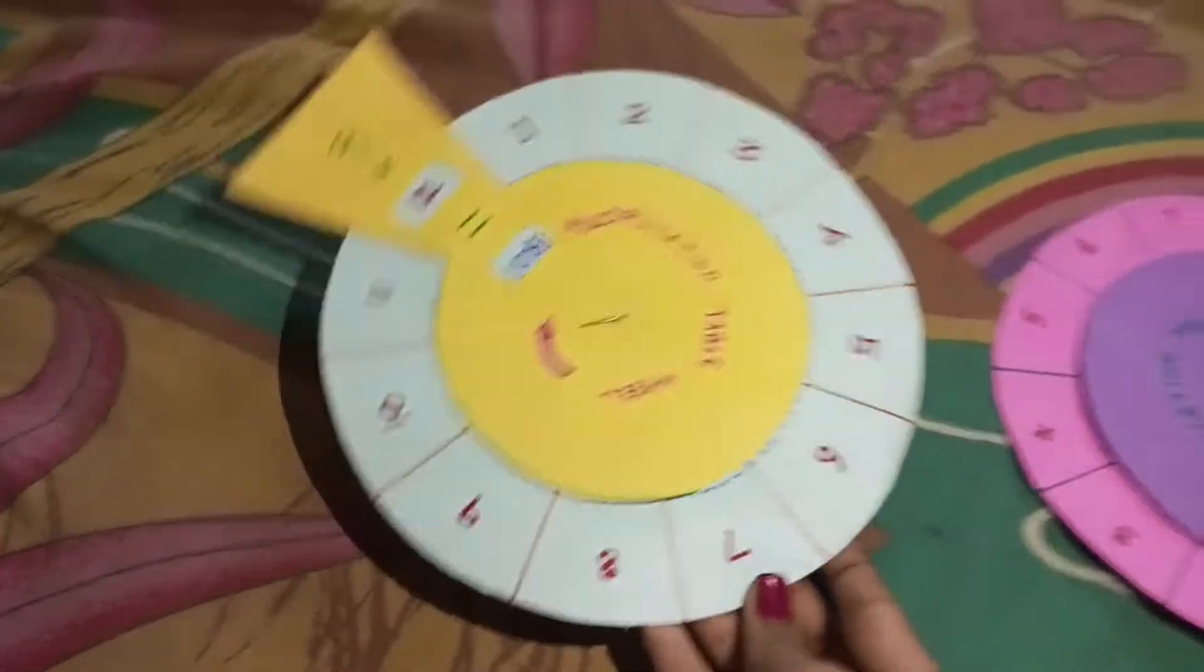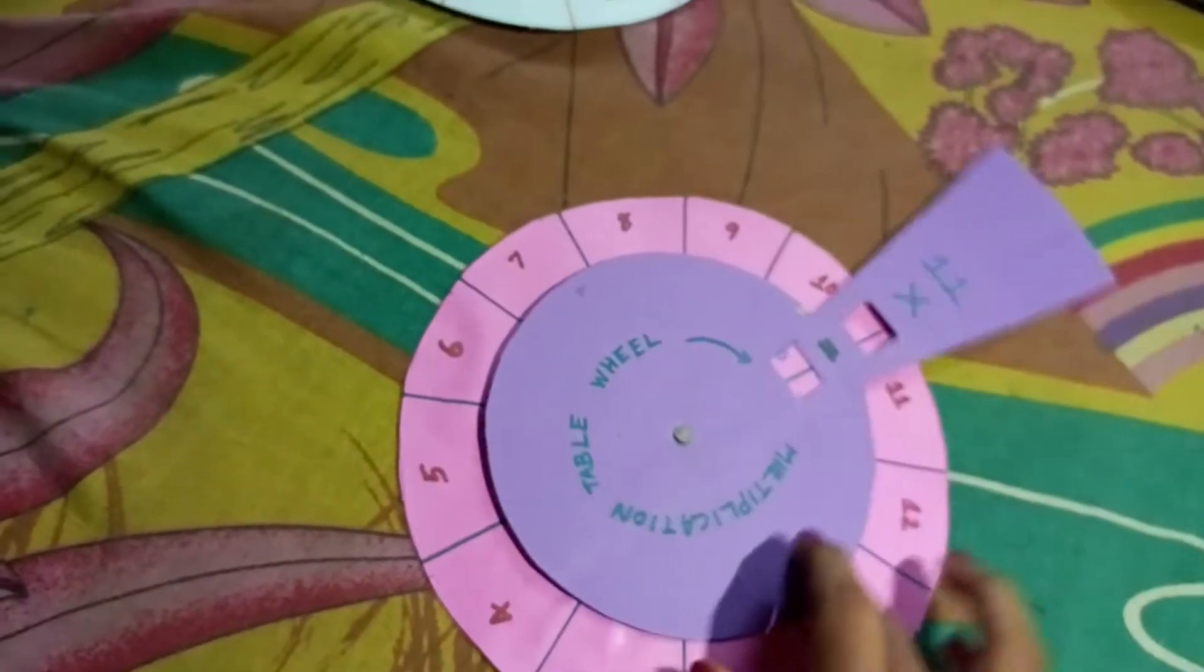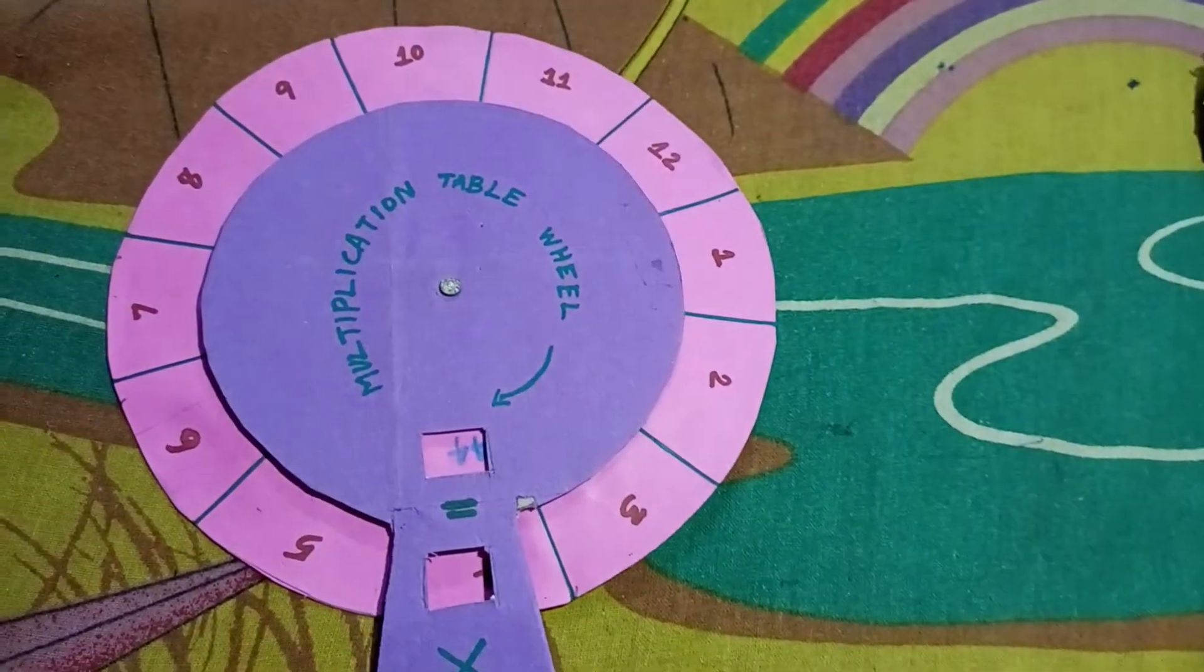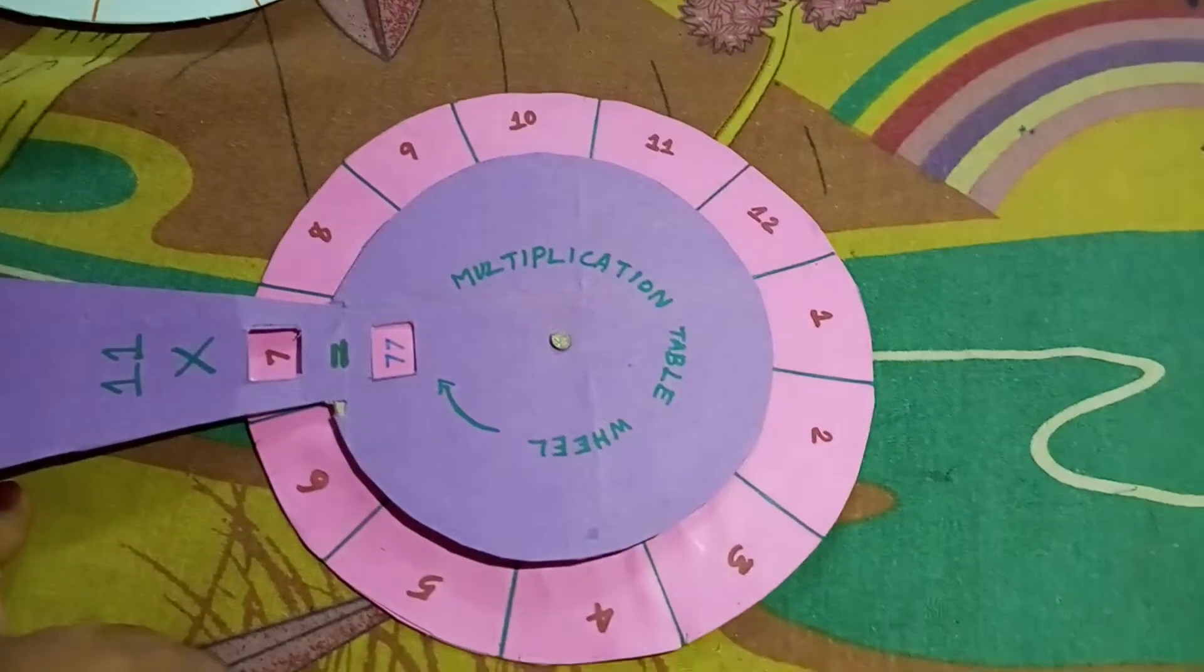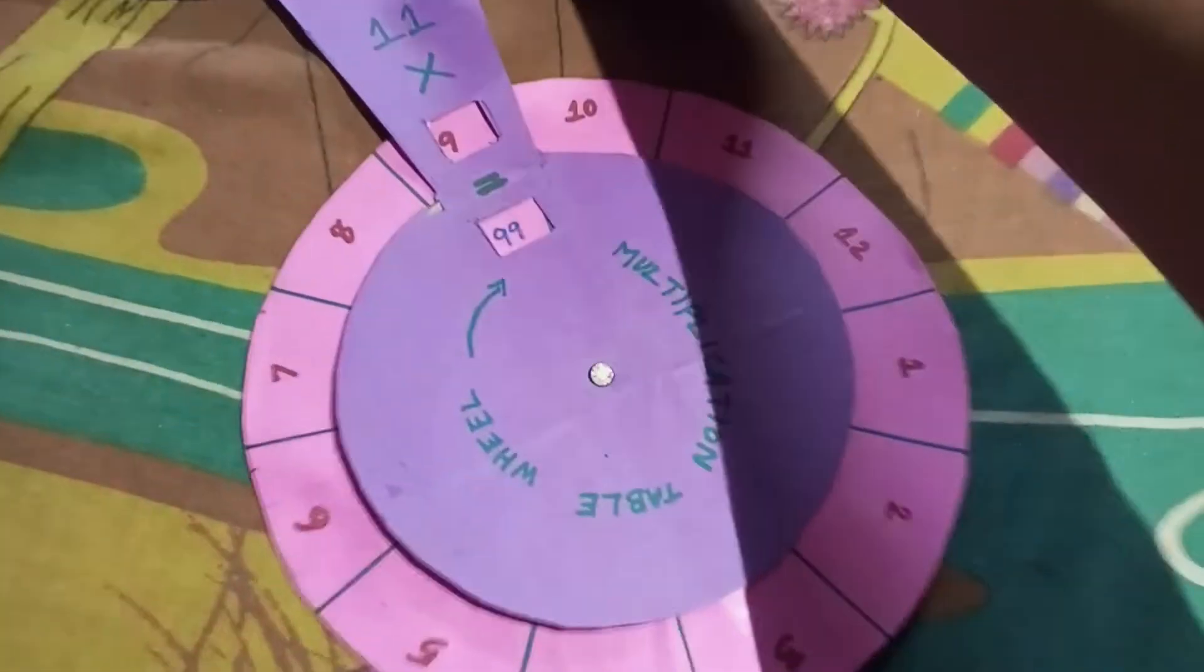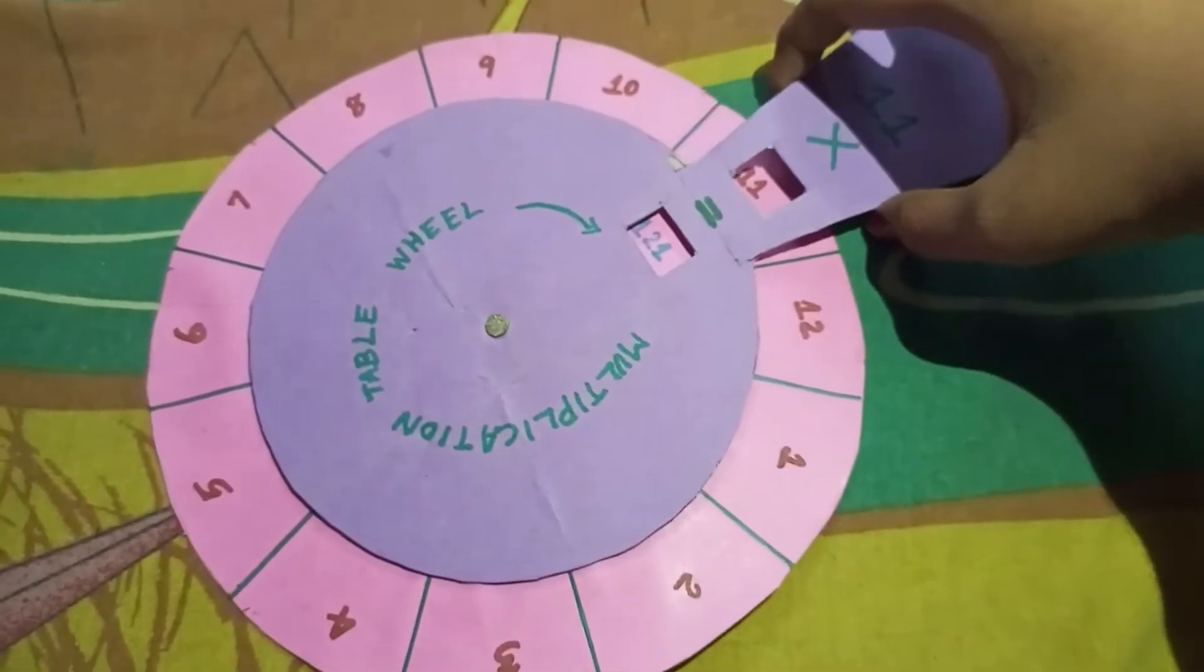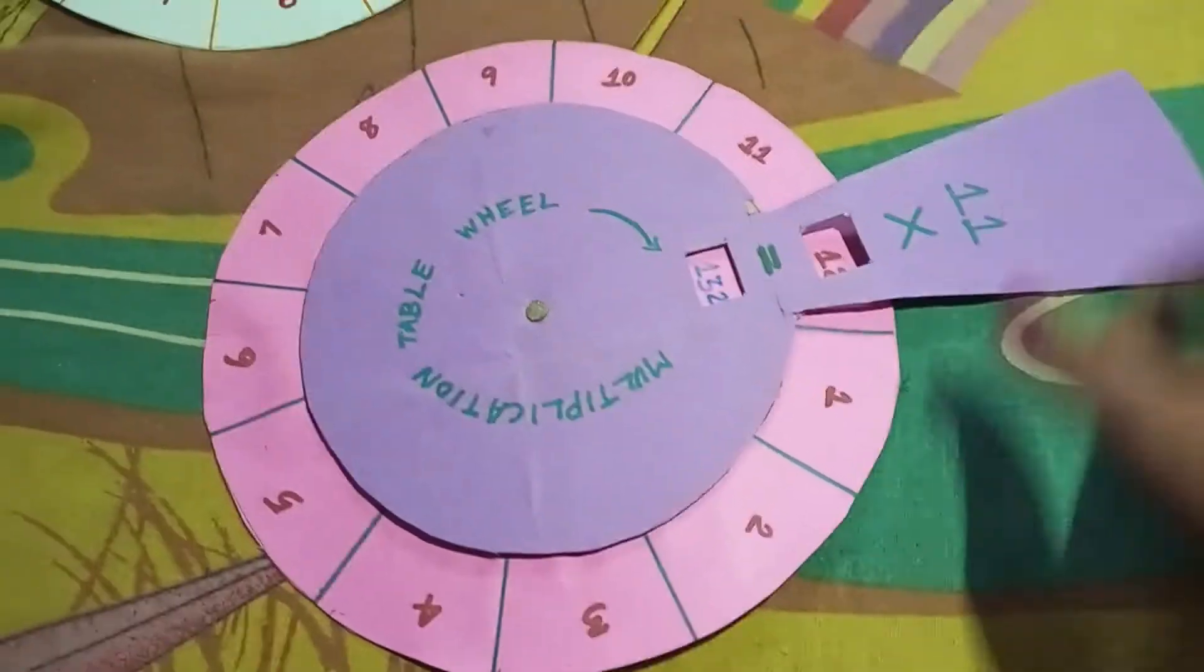So in the chart there is a 9 table. Next, 11 table chart. 11 ones are 11, 11 twos are 22, 11 threes are 33, 11 fours are 44, 11 fives are 55, 11 sixes are 66, 11 sevens are 77, 11 eights are 88, 11 nines are 99, 11 tens are 110, 11 elevens are 121, 11 twelves are 132.